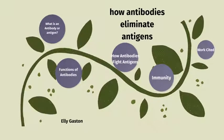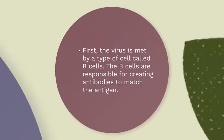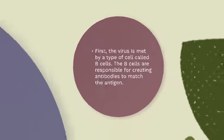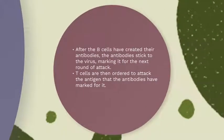Next we'll move on to how antibodies fight antigens. First, the virus is met by a type of cell called B cells. The B cells are responsible for creating antibodies to match the antigen. Second, after the B cells have created their antibodies, the antibodies stick to the virus, marking it for the next round of attack. T cells are then ordered to attack the antigen that the antibody has marked for them.